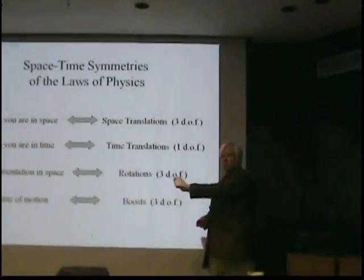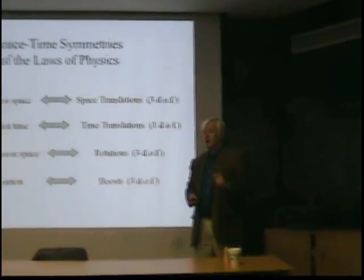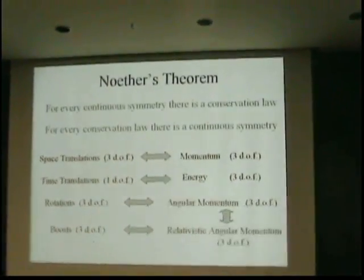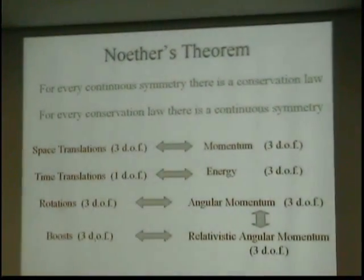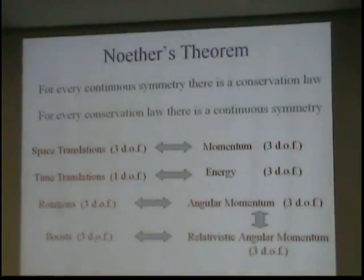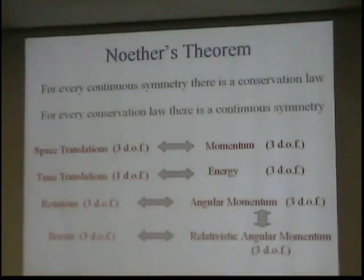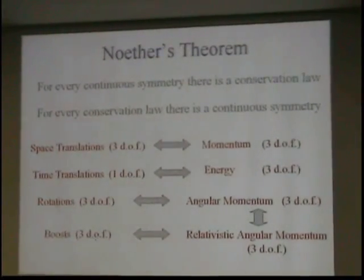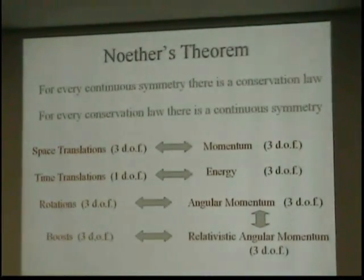We can boost the system by giving it a relative velocity to us in any of three degrees of freedom. And here comes Noether's theorem: for every continuous symmetry in nature, there's a corresponding conservation law, and for every conservation law in nature, there's a corresponding continuous symmetry. In other words, these symmetries are in one-to-one correspondence with dynamical, measurable, physical quantities.